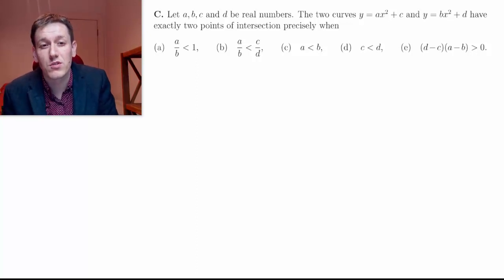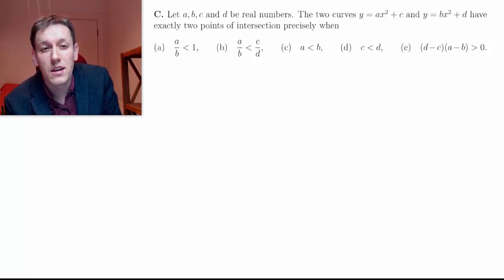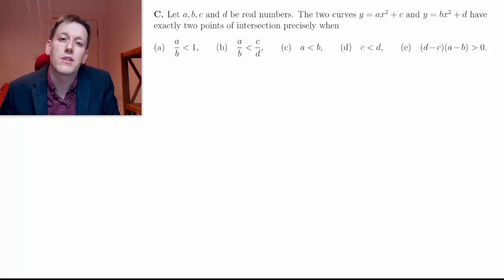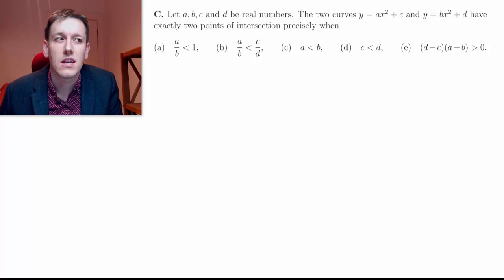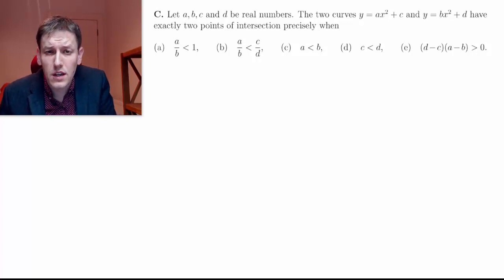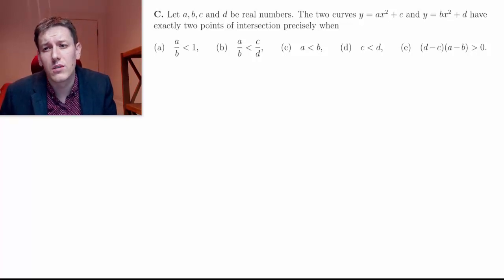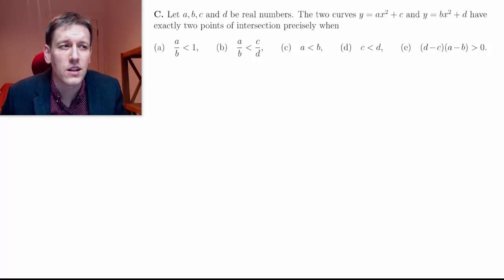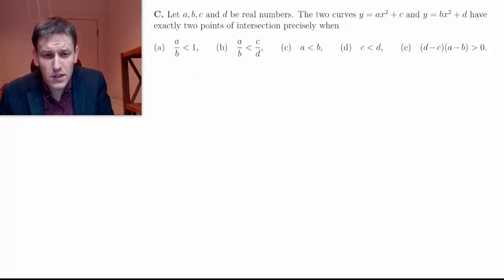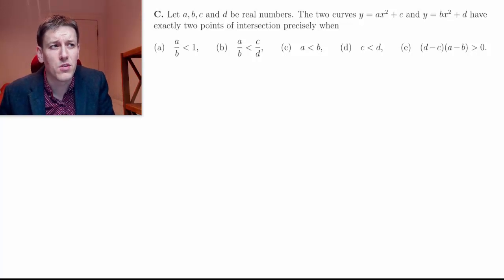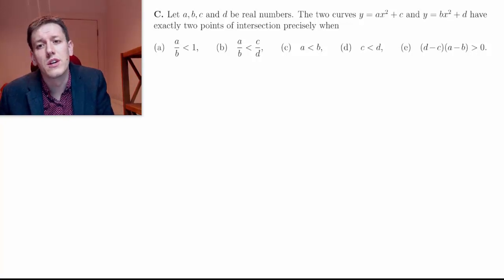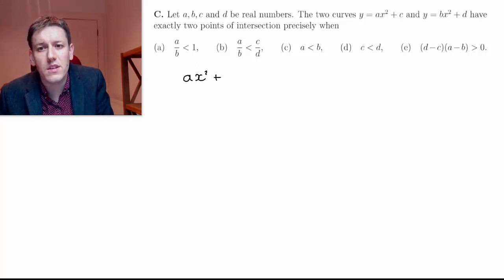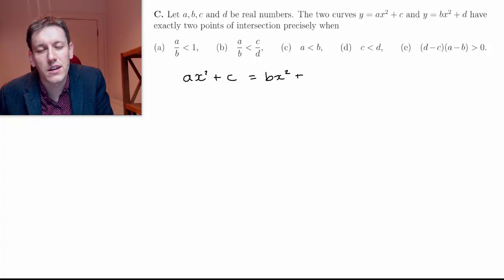We've got two parabolas here — they'd be straightforward to sketch, but I want to get straight in and try to solve them algebraically. If I can find where the intersections are, I'll get some insight into the problem. They're in a nice form to do that; they're both y equals, so the x coordinates of their intersections will satisfy ax squared plus c equals bx squared plus d.